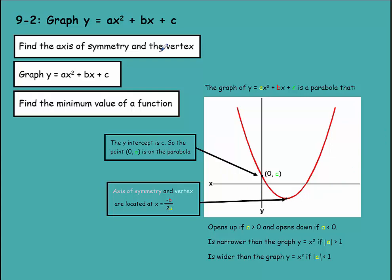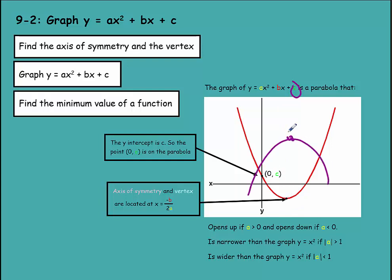Just like linear equations, there is a y-intercept for parabolas. The y-intercept is c, so the point (0, c) is somewhere on the parabola. The axis of symmetry is the line that divides the parabola in two. The vertex is at the lowest or highest point of a parabola, located at x equals negative b over 2a.